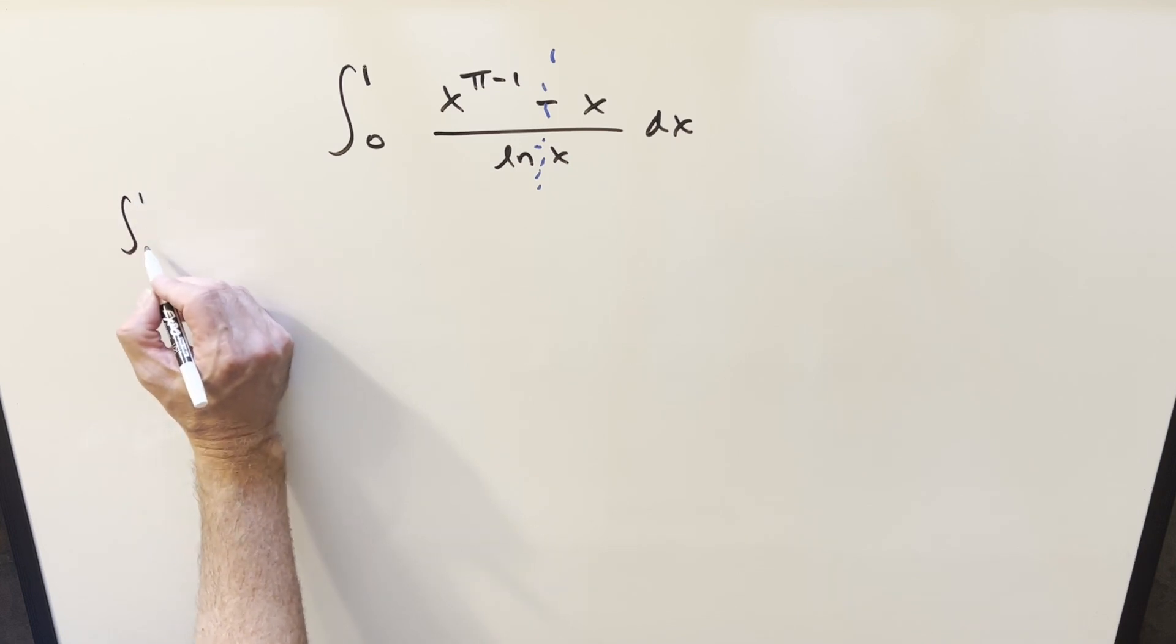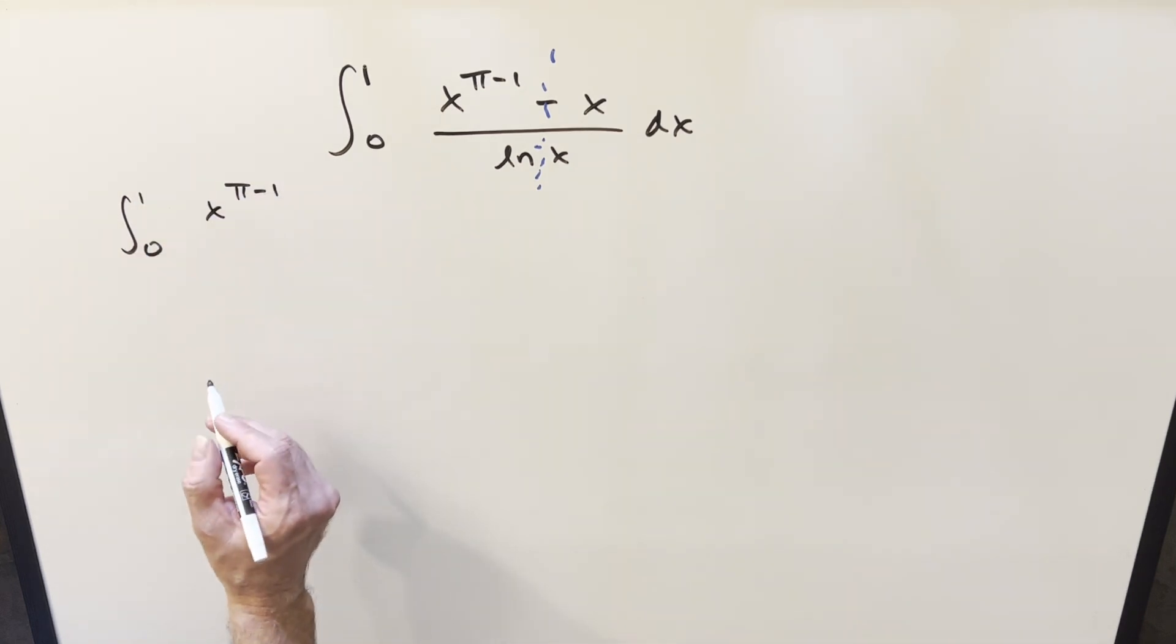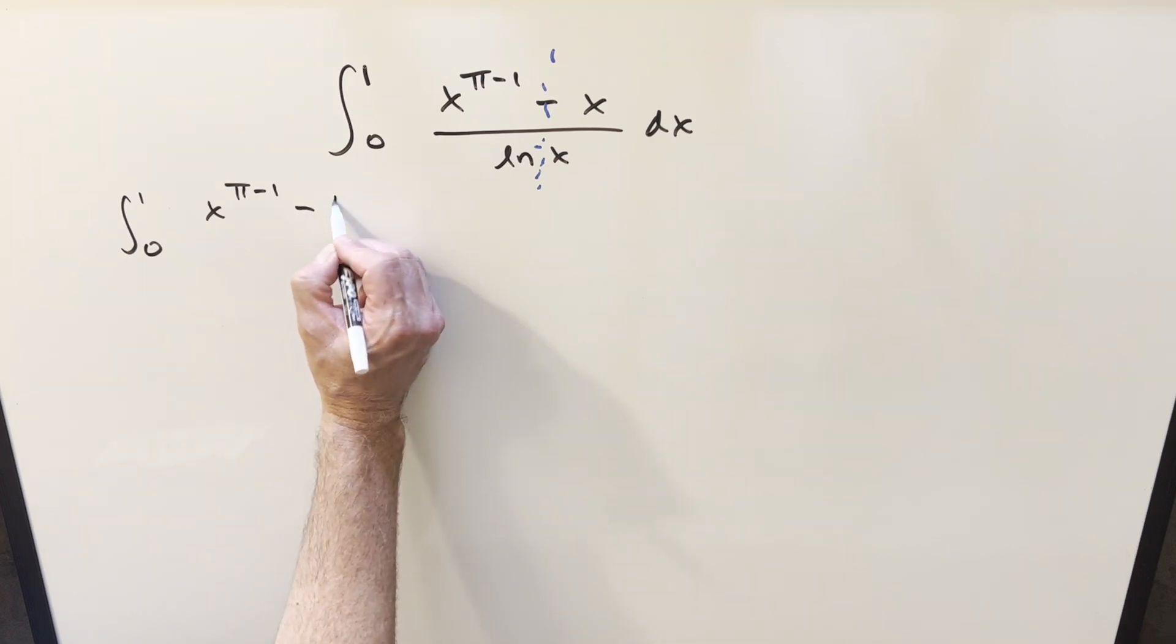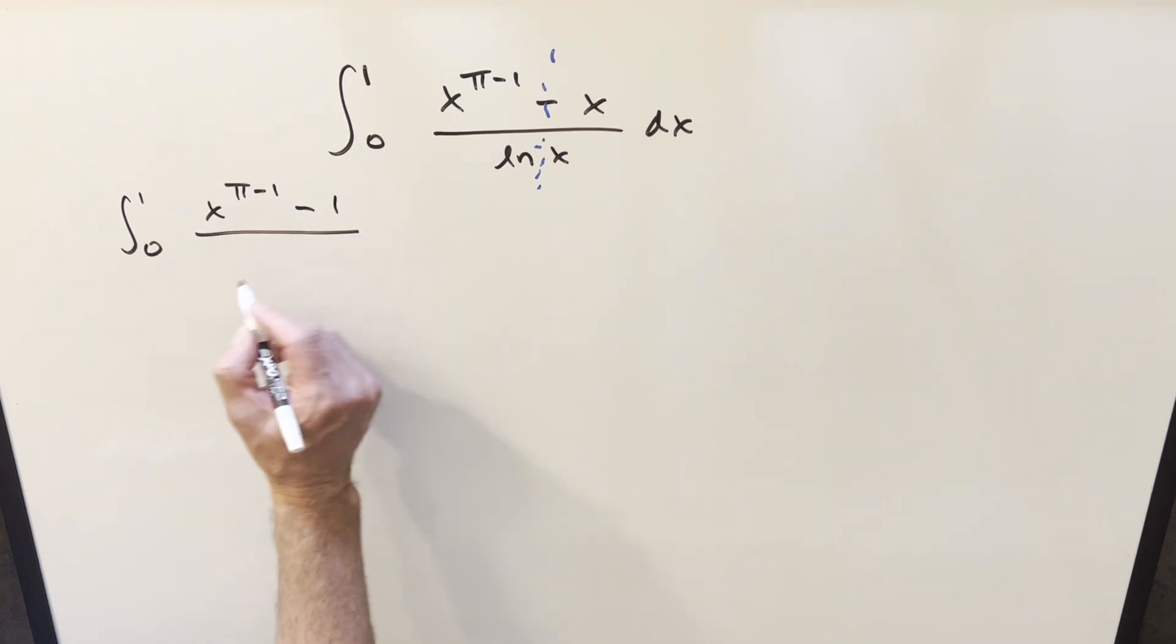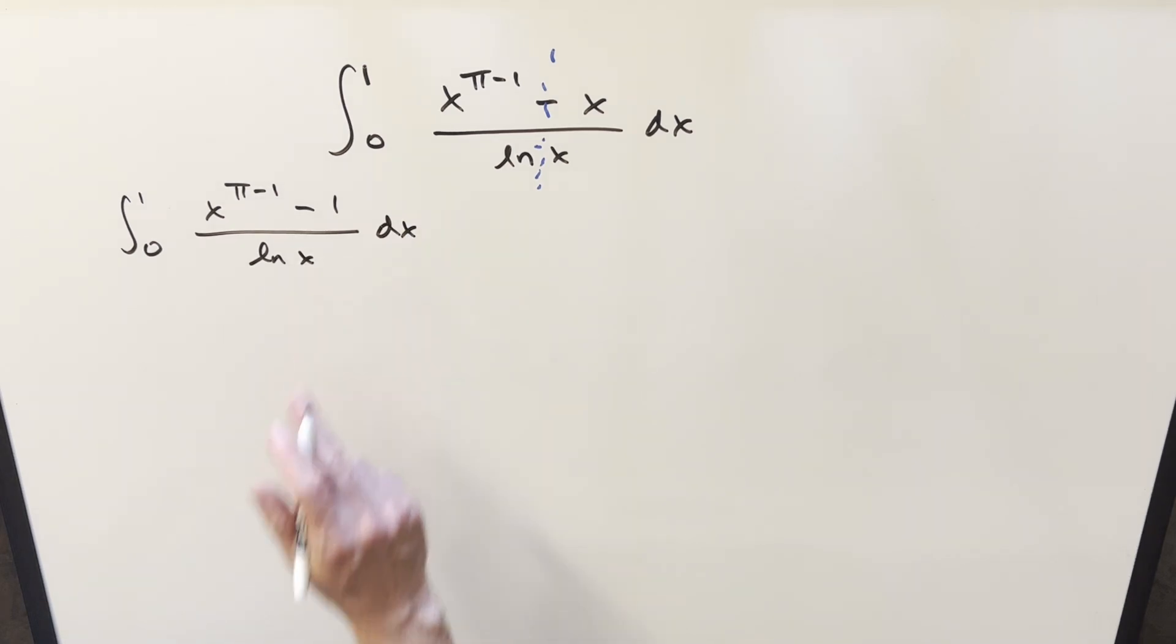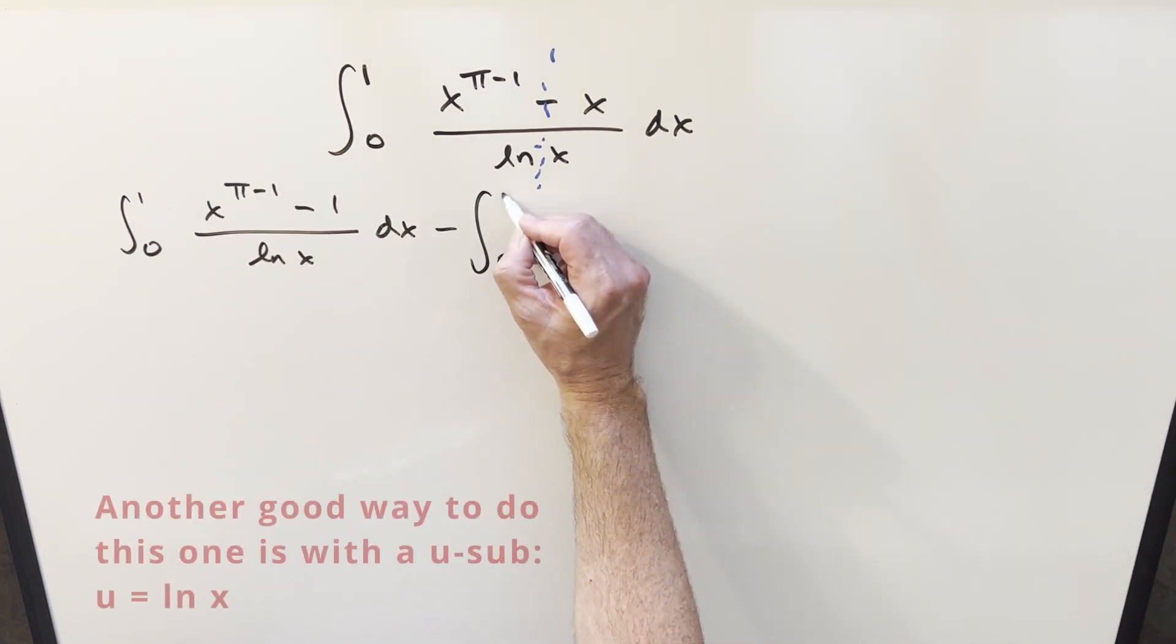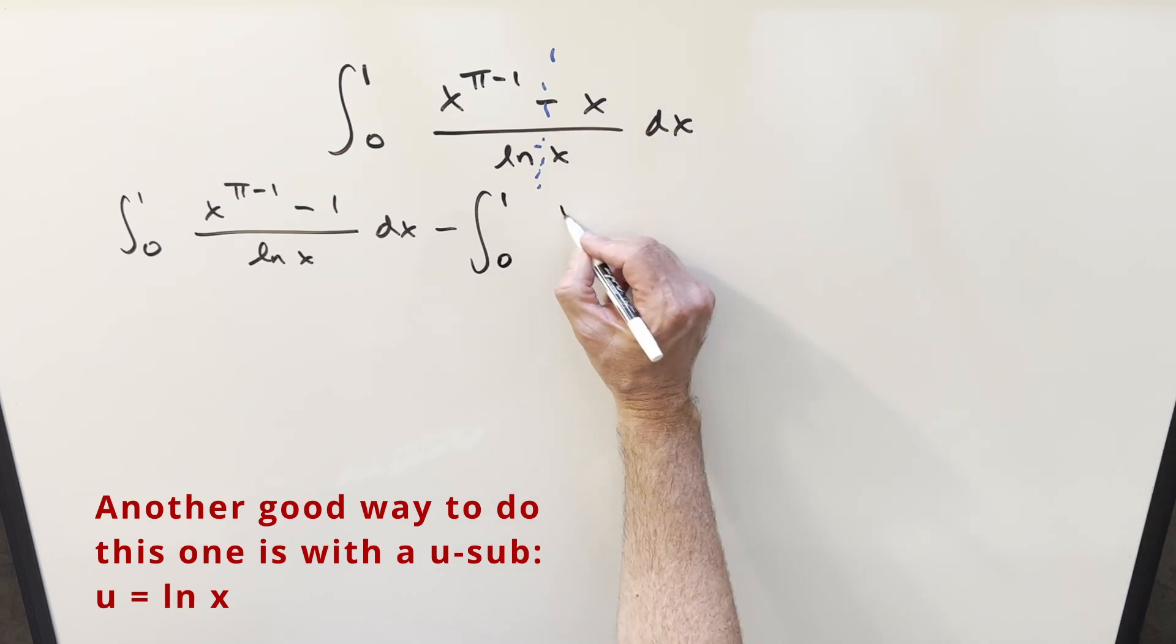So for now, what I'm going to do is let's do something else instead. Let's split this up in the two. But what I'm going to do is for the first one, for x to the pi minus 1, I'm going to create this minus 1 here. So that way, now this integral we can do, this is actually convergent. But now I don't want to change it. So what I'm going to have to do is we need to do something when we create this second part, this x, I'm going to do the same thing.